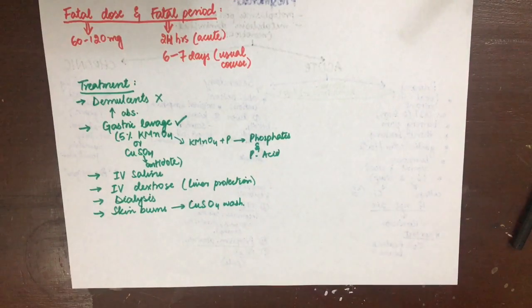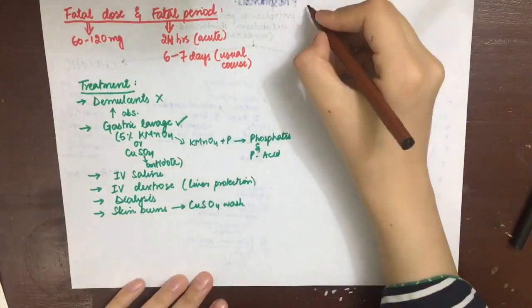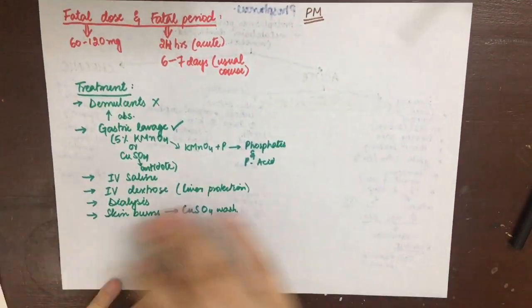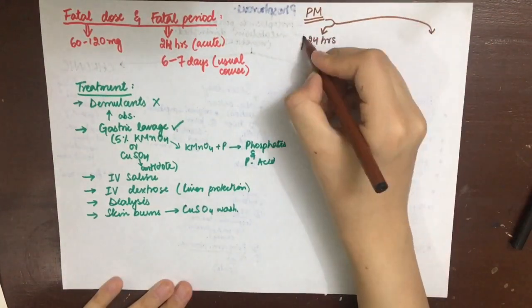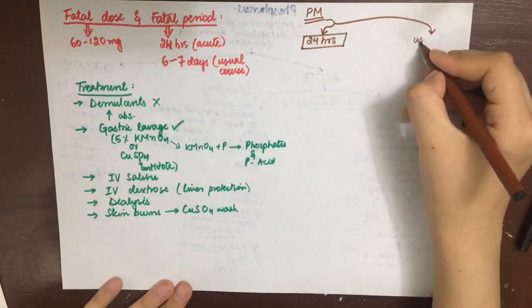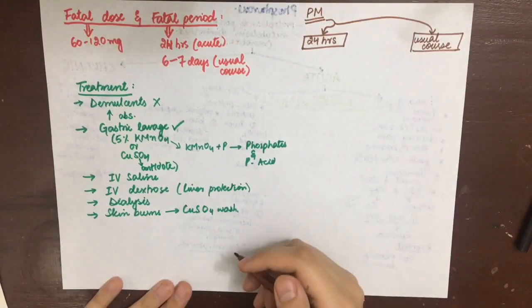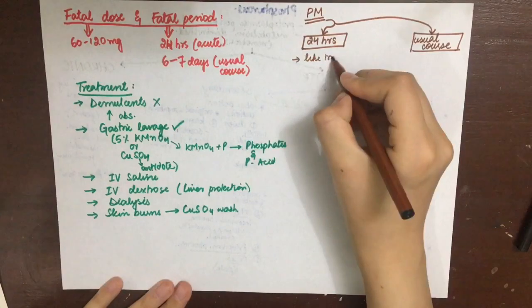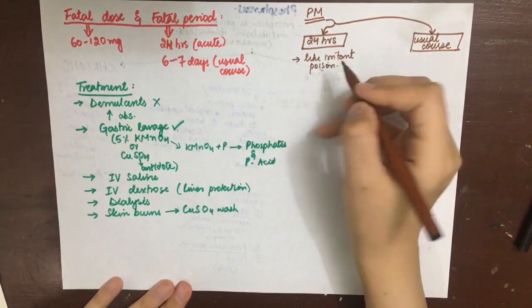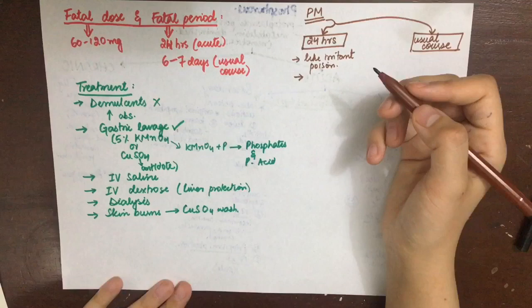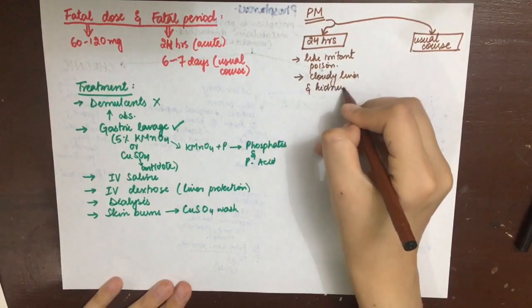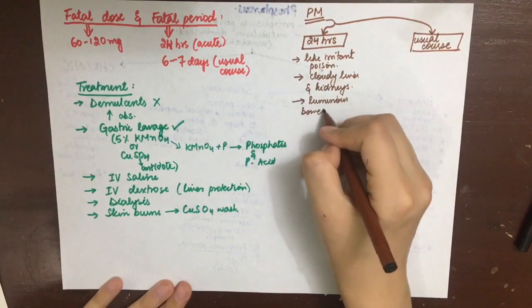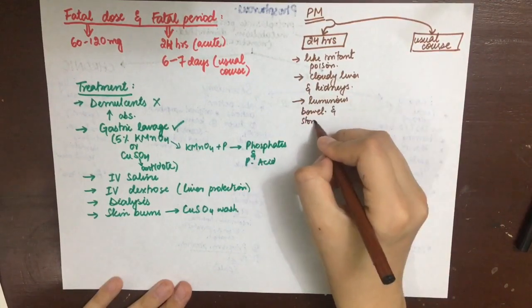In case of death with phosphorus poisoning, death can be within 24 hours of toxicity or the toxicity can follow its usual course with the period of remission in between. 24-hour poisoning will look like irritant poison. The corrosive action of mucous membranes of pharynx, esophagus, and stomach is seen. Cloudy liver and kidneys, and luminous bowel and stomach contents are seen.